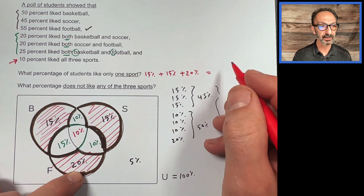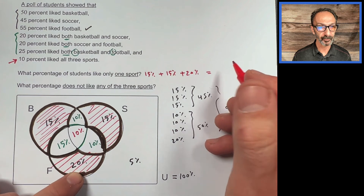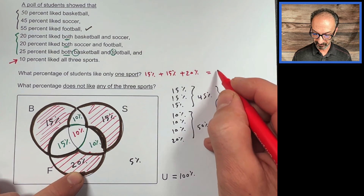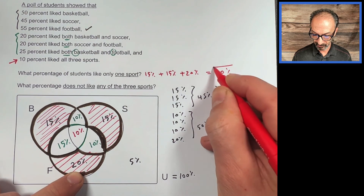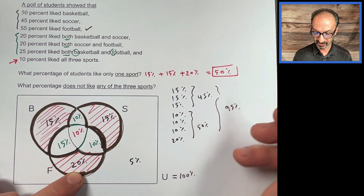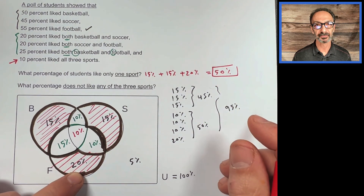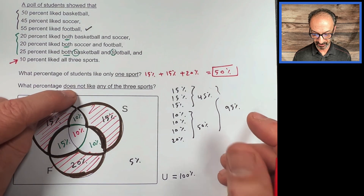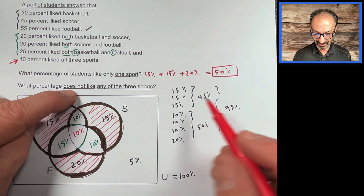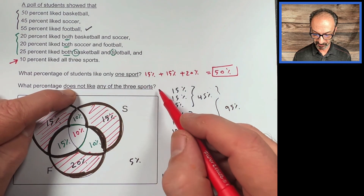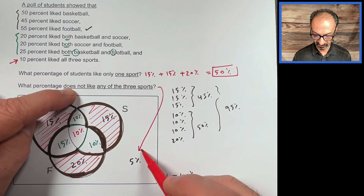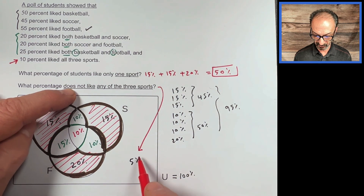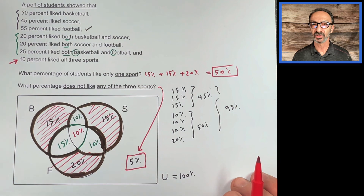For the second question — what percent does not like any of the three sports — it's already found: 5%. That's the region outside all three circles. That should do it, thank you.